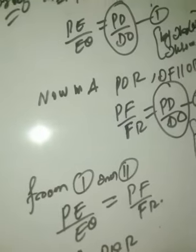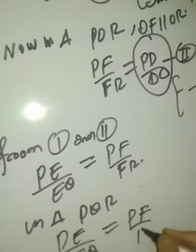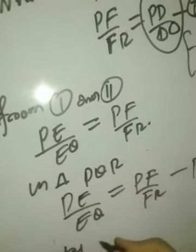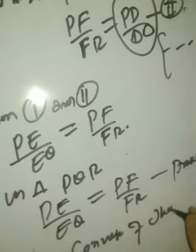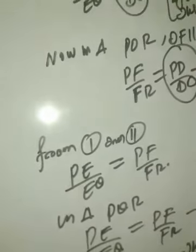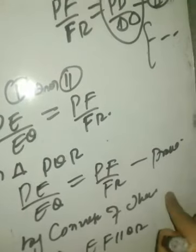In triangle PQR, we have PE/EQ = PF/FR, which we have already proved. Therefore, by the converse of Thales' theorem — if a line segment divides any two sides of a triangle in the same ratio then it is parallel to the third side — PE/EQ = PF/FR implies EF∥QR. Please write the complete statement of Thales' theorem in your examination rather than just the name.